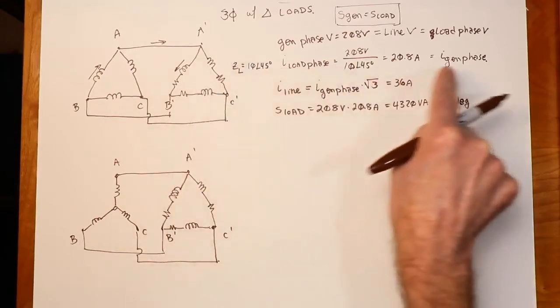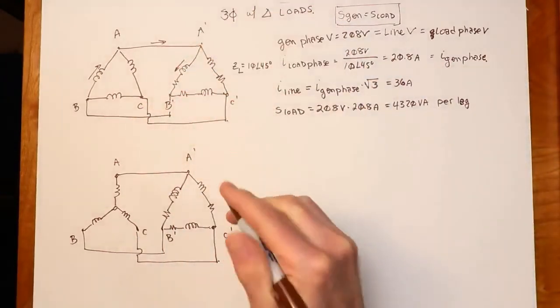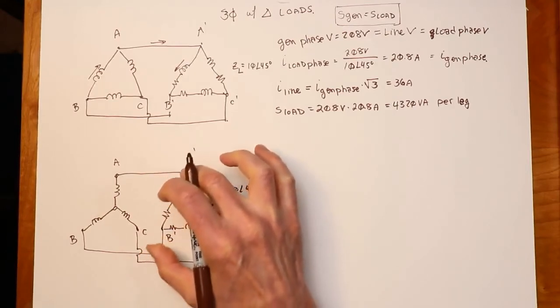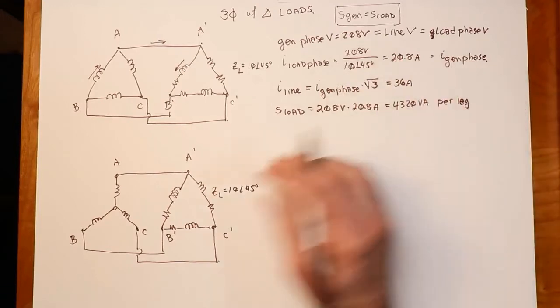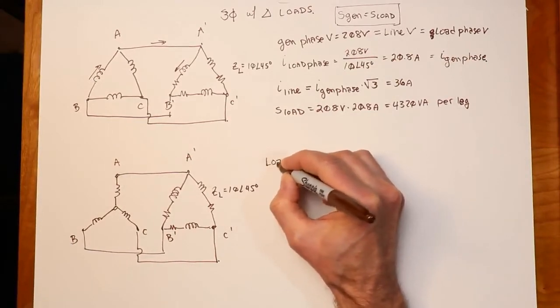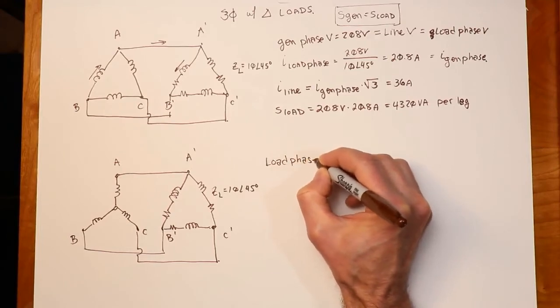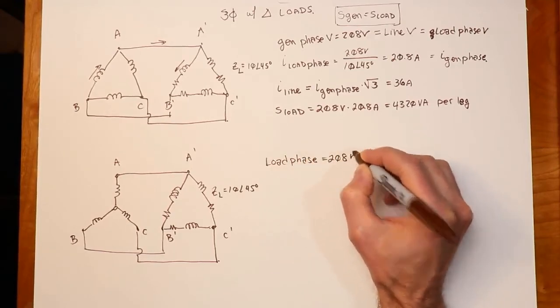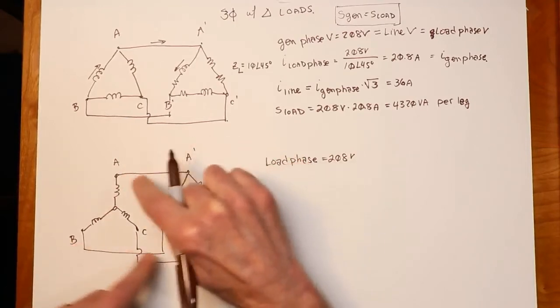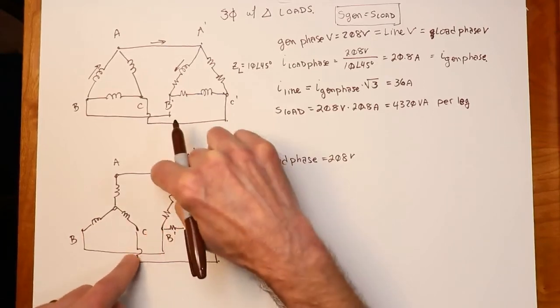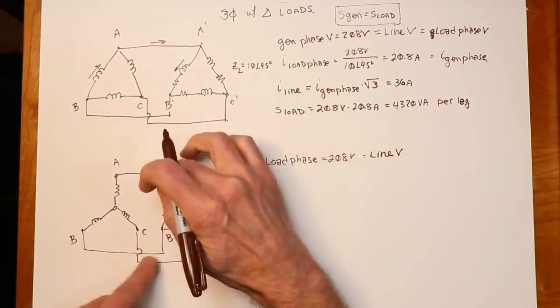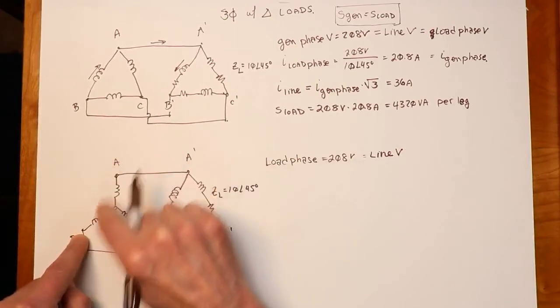So I want to get the same kind of result in this circuit as I have in this connection over here. In other words, I want to end up with the same load conditions. I have this same ZL, 10 at 45. What did I have for a load phase voltage? Well, I had the 208. I still want that. How do I get 208 out of here? So let me just put down what I want to get. I want a load phase voltage of 208 volts. Now, because this load is set up in a delta configuration, the delta configuration has this characteristic that that phase is the same as the line. So this would be true that that's also equal to your line voltage.